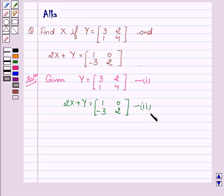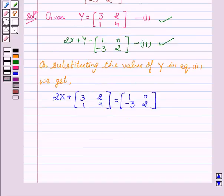Now on substituting the value of Y in equation second, we get 2X plus [3, 2, 1, 4] equals [1, 0, minus 3, 2].